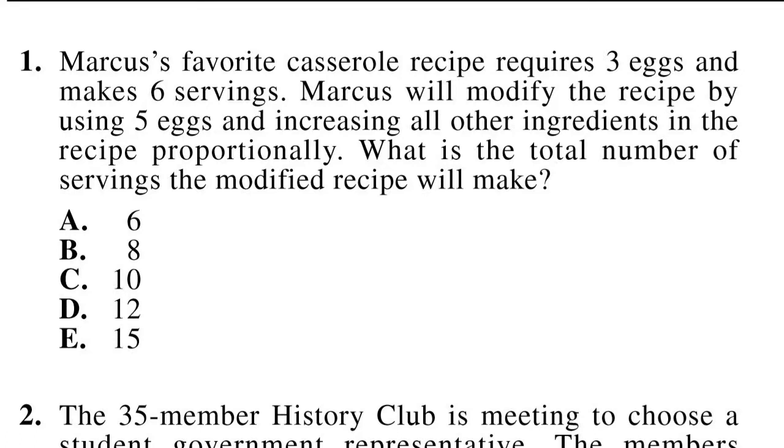Starting with number 1, we see that Marcus' favorite casserole recipe requires 3 eggs and makes 6 servings. Marcus will modify the recipe by using 5 eggs and increasing all other ingredients in the recipe proportionally. What is the total number of servings the modified recipe will make? A key word we have here is proportionally. Anytime we see that word, we can ask ourselves, can we use a proportion to solve this problem?